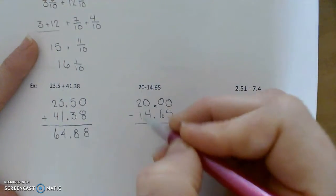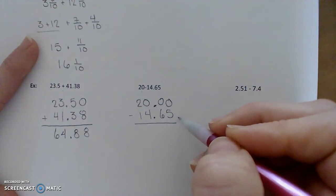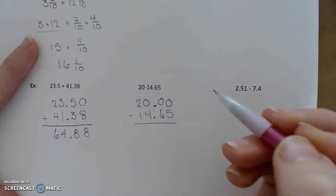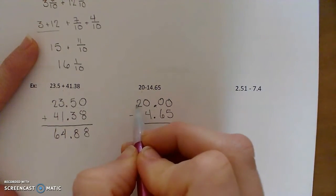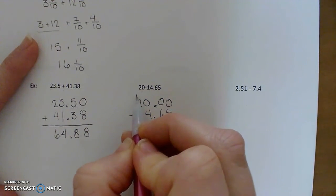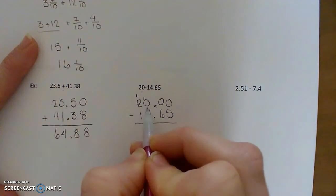All right. And in order to do this subtraction, you may want to regroup your place values. So we need to go over all the way to this 2, knock that down to a 1, right? And then give a group of 10 to this place value.